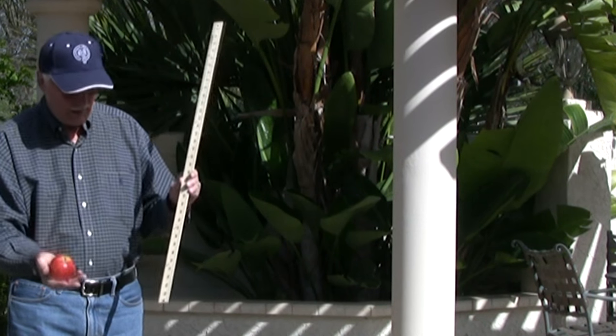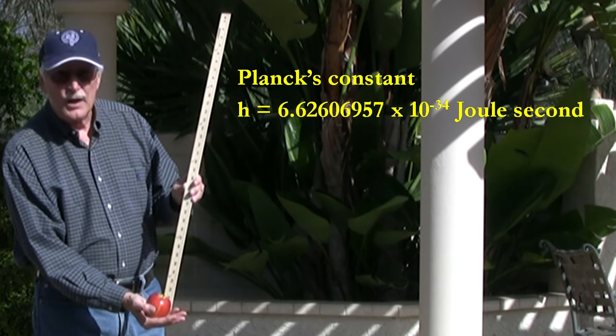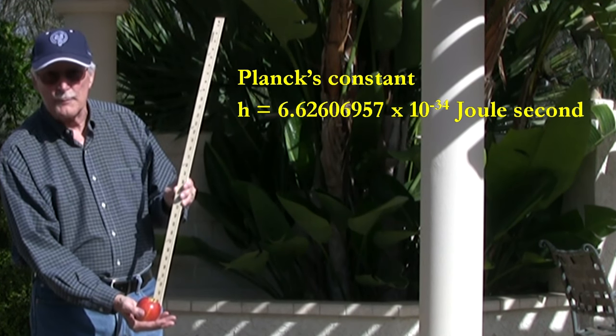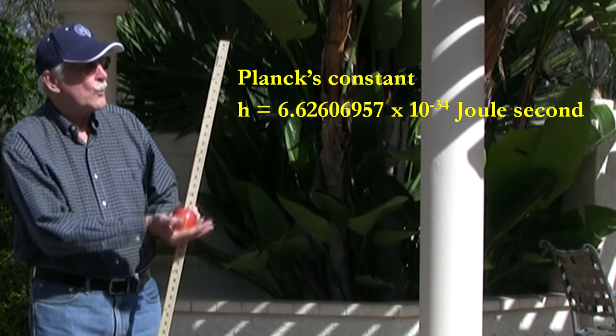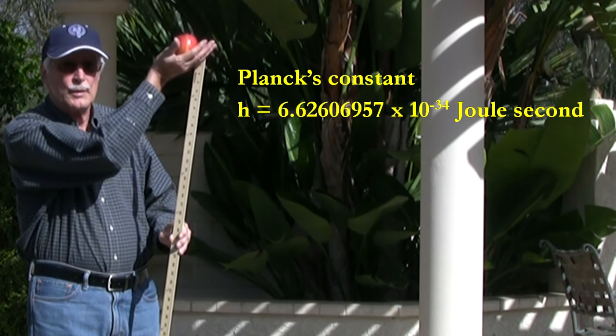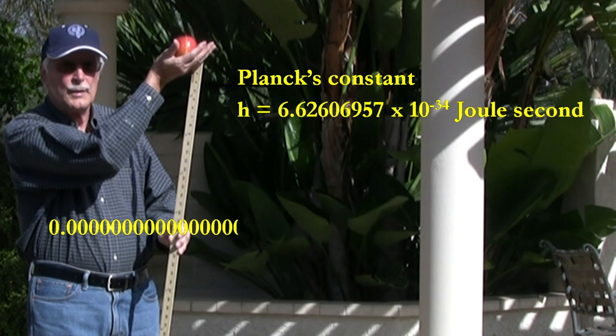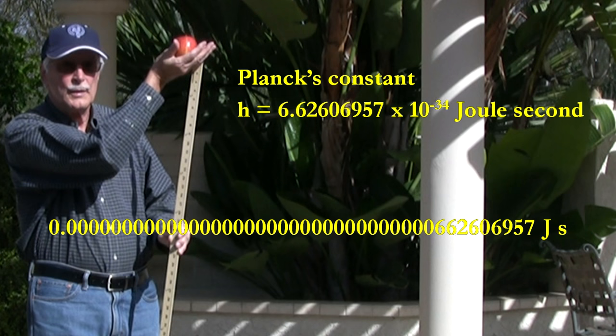Unlike the speed of light that's a really big number, Planck's constant is a really small number. Remember that a joule of energy was the energy needed to lift the apple? Planck's constant is 66 billion trillion trillion times smaller than that.